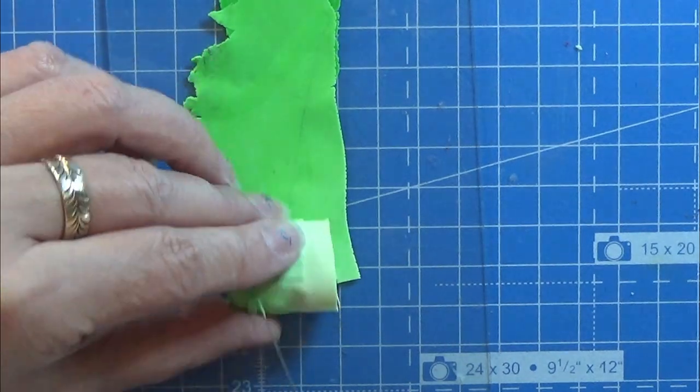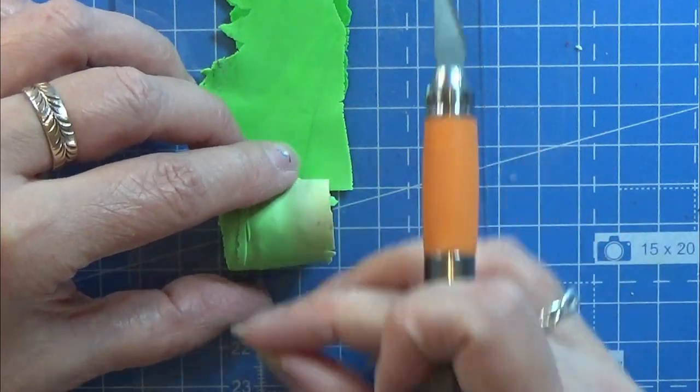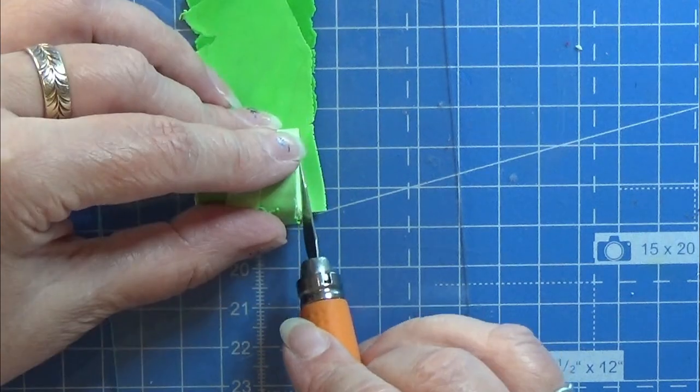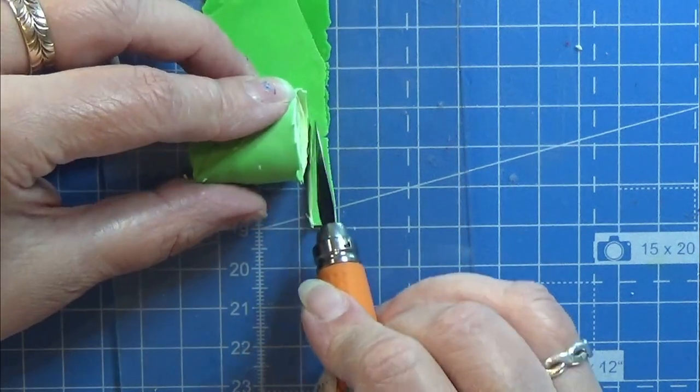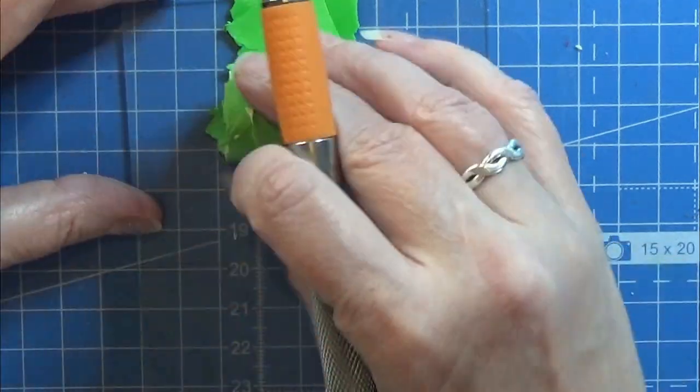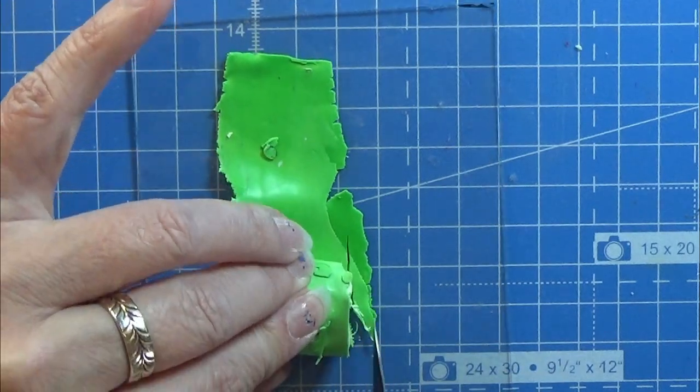And I'm just cutting off the excess around and placing it into this little roll up, and just going carefully all the way down the Skinner blend, making sure that I have the darker green all the way around the cane here.